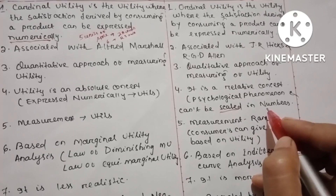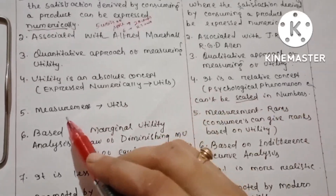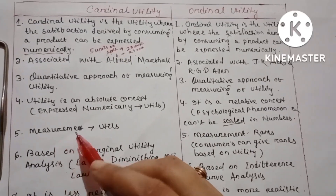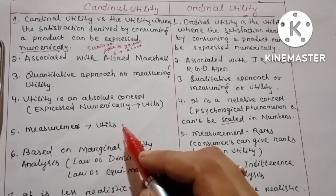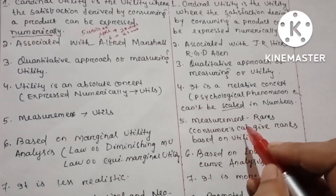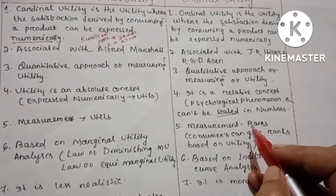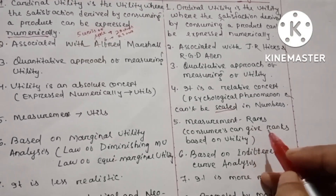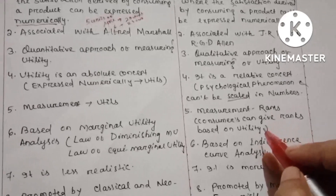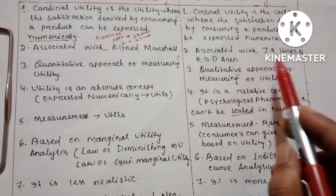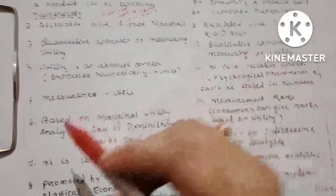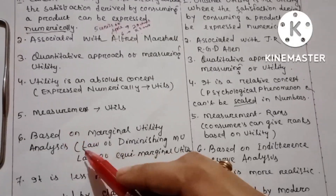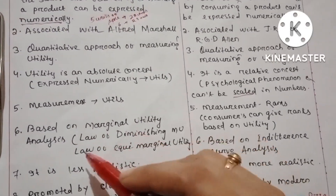Measurement of cardinal utility is possible in utils. For ordinal utility, the consumer can give a ranking based on utility but it can't be expressed numerically.